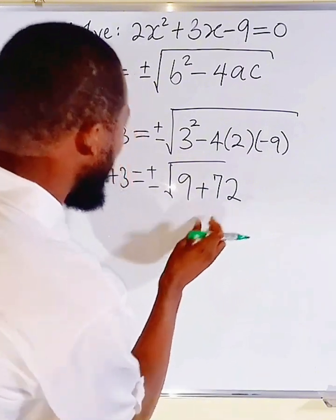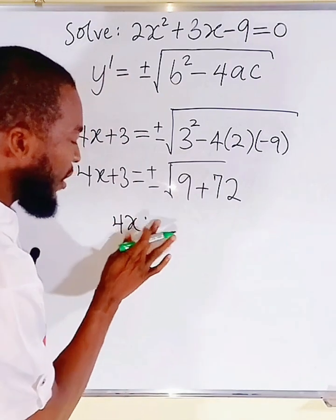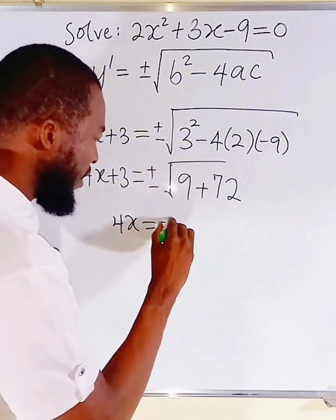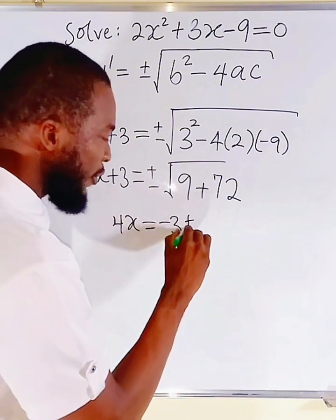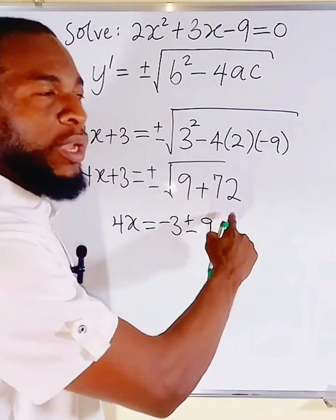And the square root of 81 is 9. So, therefore, everything here is 9. We have 4x plus 3, and I may decide to take 3 to the right-hand side. And it becomes negative 3.